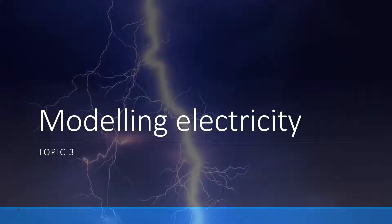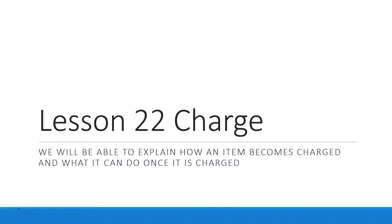Area topic four is specifically about circuits. For those of you who did my engineering maths course, this will probably be very similar and easy. Those who didn't may not be familiar with some things, but that's okay — we're going to build up. Lesson 22's main goal is to talk about how an item becomes charged, what makes something charged, and what happens once it is charged.